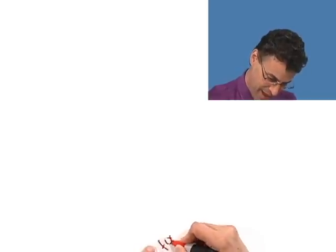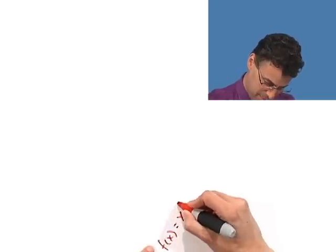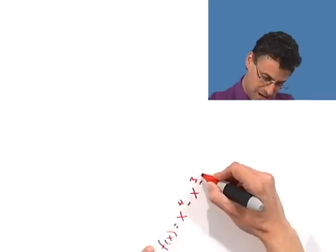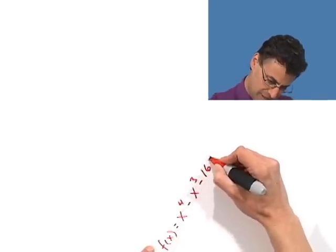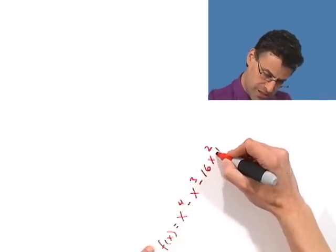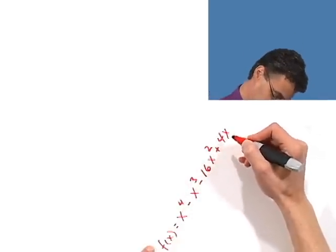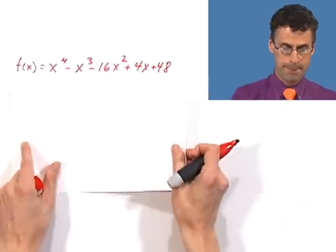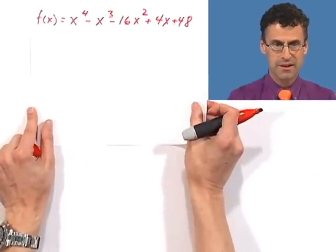So the polynomial is f(x) equals x to the fourth minus x cubed minus 16x squared plus 4x plus 48. Okay, there we go. So that is the polynomial that I want us to look at.